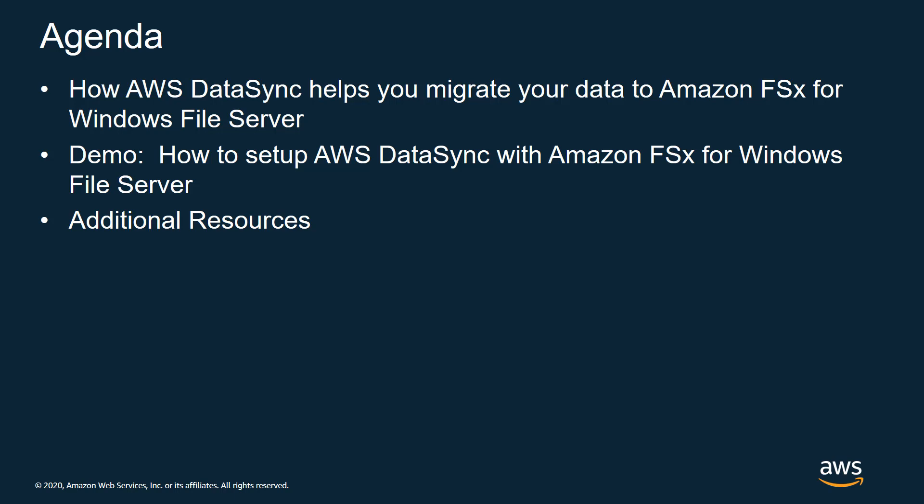Here's a brief agenda. The first thing I want to do is cover how AWS DataSync can help you migrate your data to Amazon FSx for Windows File Server, then walk through a demo of migrating data from my on-premises file server to Amazon FSx for Windows File Server, and then provide some additional resources.